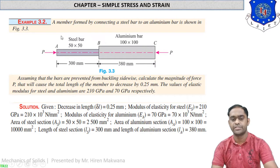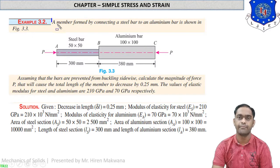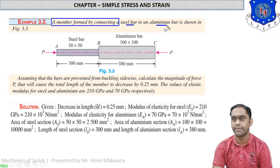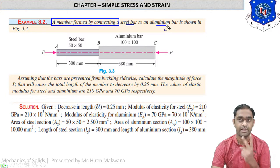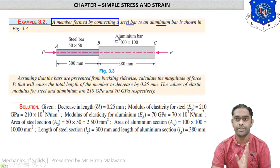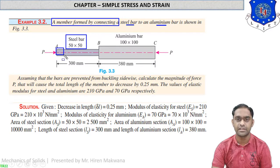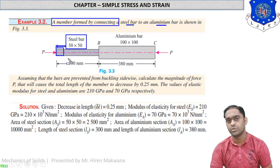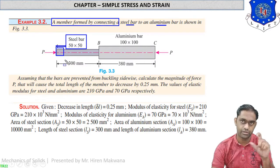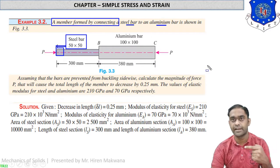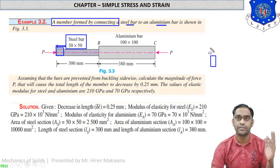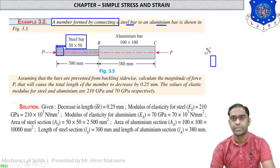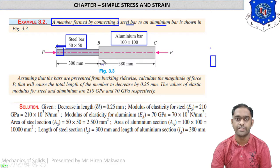This is numerical number 2. A member is formed by connecting a steel bar to an aluminium bar. The steel bar is 50 × 50 mm (cross-section area 2500 mm²) and the aluminium bar is 100 × 100 mm (cross-section area 10,000 mm²). The length of the steel section is 300 mm and the length of the aluminium section is 380 mm.